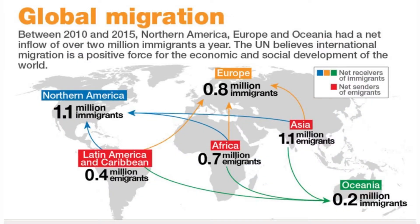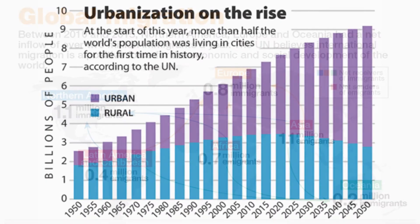There has also been significant geographic movement of population. This chart shows some of the movements between 2010 and 2015. Some of the factors leading to population movement among countries are economic opportunity, forced movement, conflict, persecution, and climate change. Within countries, there has been a continuing movement of individuals from rural to urban areas.